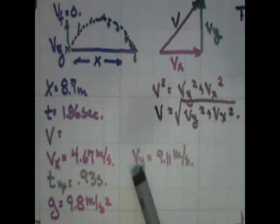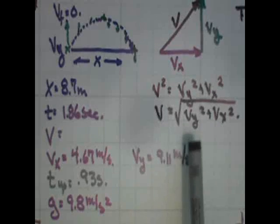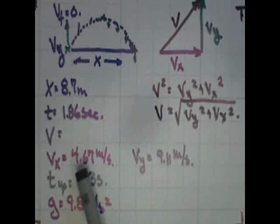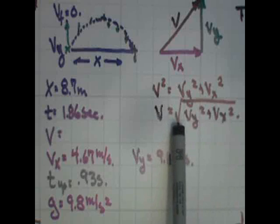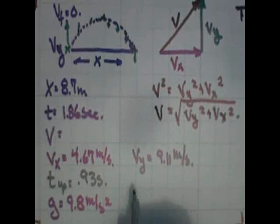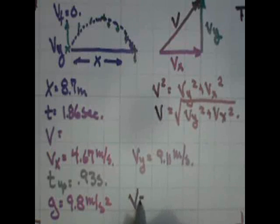So if you take vy, which you might still have on your calculator, square it, add it to vx, square that, hit enter, and then take the square root of that, it will tell you the actual velocity of the golf ball, which is a useful bit of information. Good luck trying it yourself.